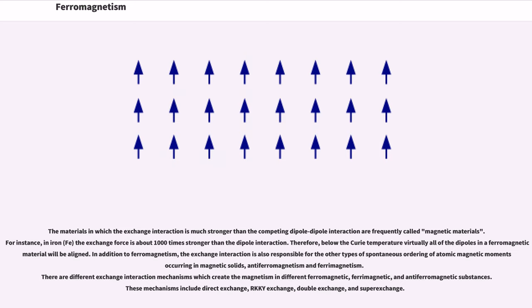In addition to ferromagnetism, the exchange interaction is also responsible for the other types of spontaneous ordering of atomic magnetic moments occurring in magnetic solids: anti-ferromagnetism and ferrimagnetism. There are different exchange interaction mechanisms which create the magnetism in different ferromagnetic, ferrimagnetic, and anti-ferromagnetic substances. These mechanisms include direct exchange, RKKY exchange, double exchange, and super exchange.